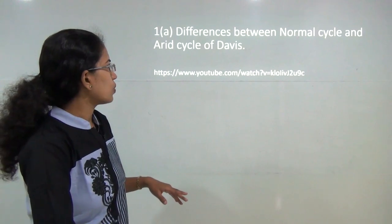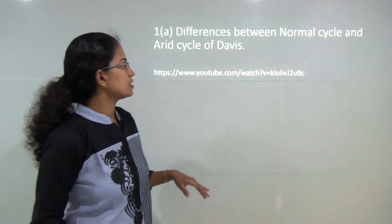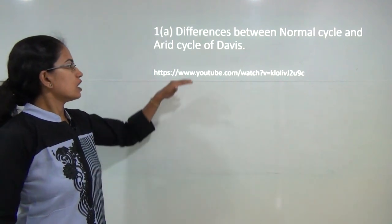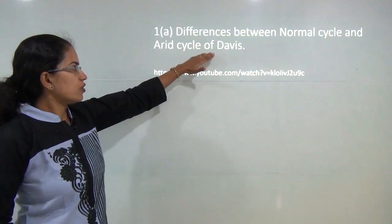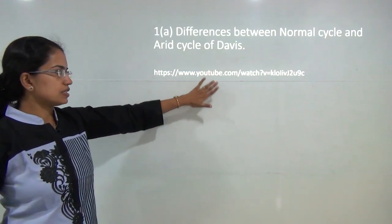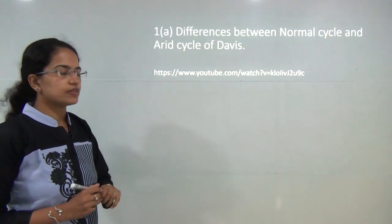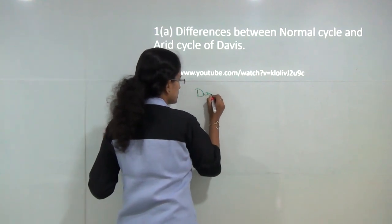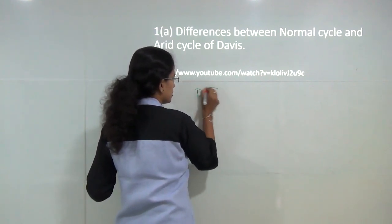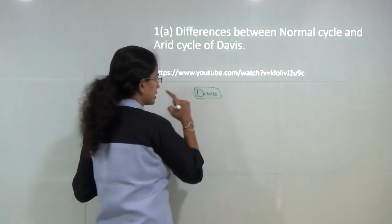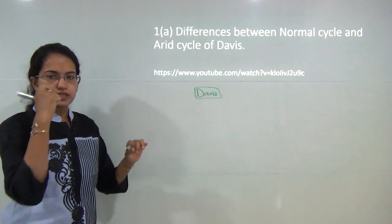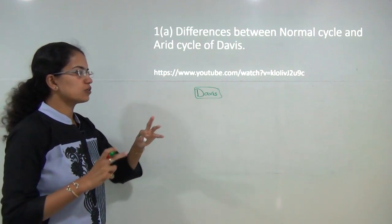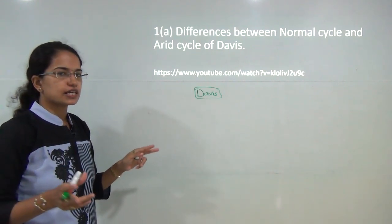The first question here is the difference between the normal cycle and the arid cycle of Davis. We have already talked about the cycle of Davis in a previous video — you can refer that. When you answer this question, you must start with the basic idea propounded by Davis. The normal studies that Davis did were under a humid or normal cycle of erosion.